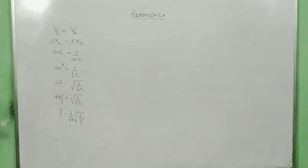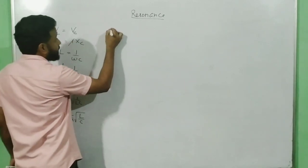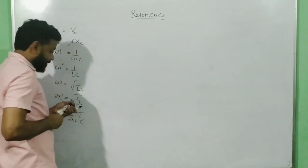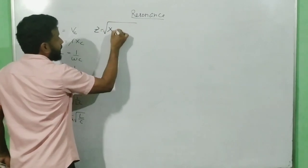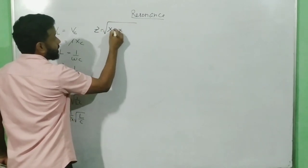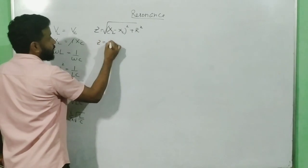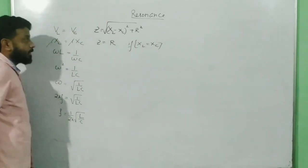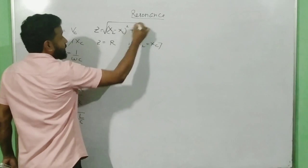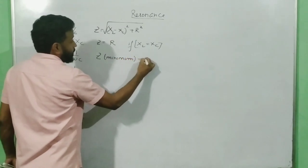This is what we saw in the last class. Since XL equals XC, the impedance Z, which was equal to root over of (XL minus XC) whole square plus R square, reduces to only R when XL equals XC. So in this case, this impedance is the minimum impedance, equal to R.